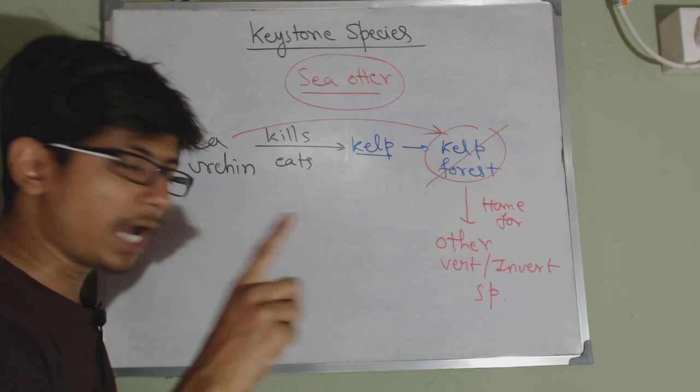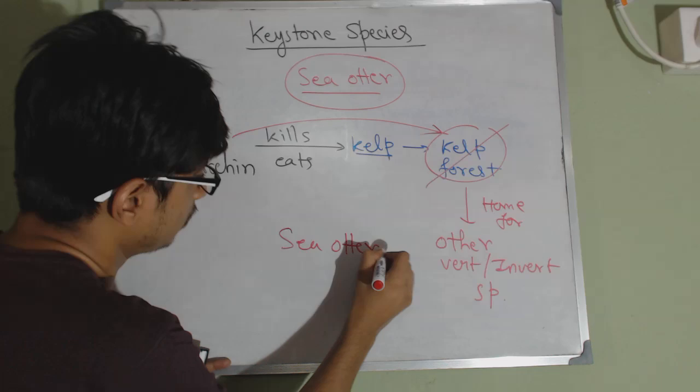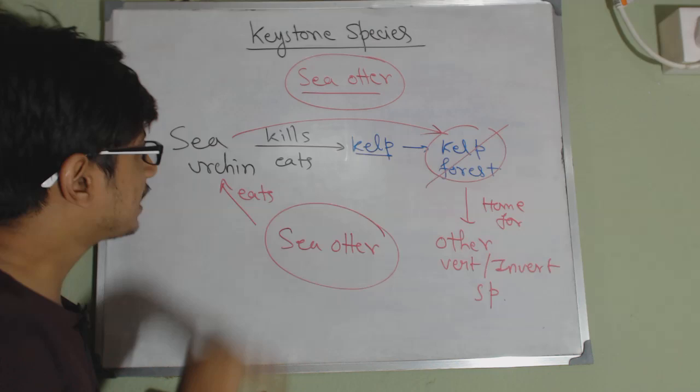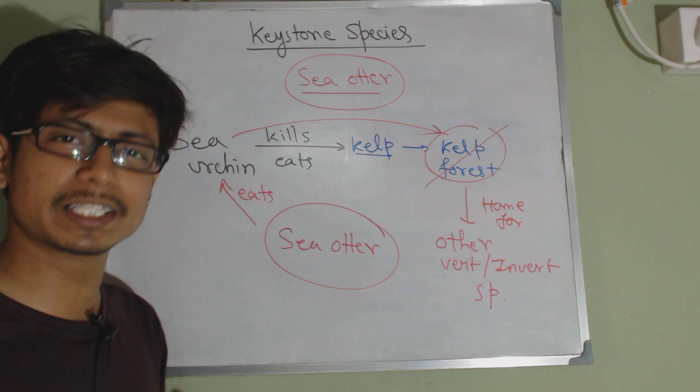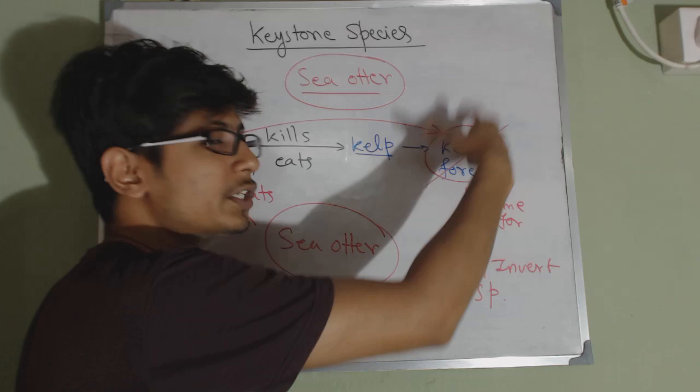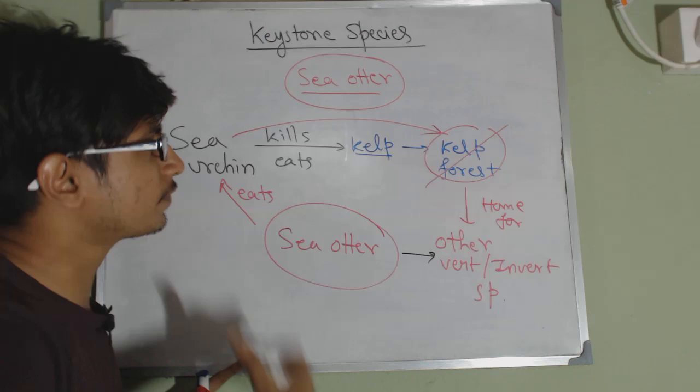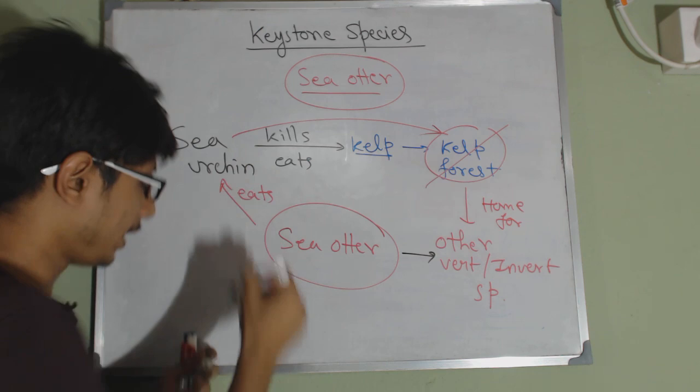So if sea urchin is present, there's less kelp forest in the ocean, so fewer other species. The presence of sea urchin is destroying some other species indirectly. Now sea otter eats sea urchin. So as sea otter eats sea urchin, it can reduce the population of sea urchin. As a result, kelp forests can now grow. Kelp forests grow, all the other species can come back and survive. So the presence of sea otter is indirectly helping thousands of invertebrate and vertebrate species to live and thrive.